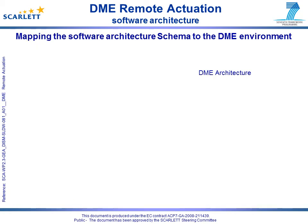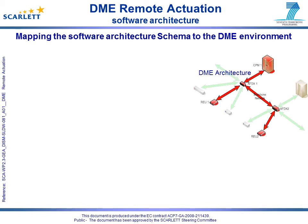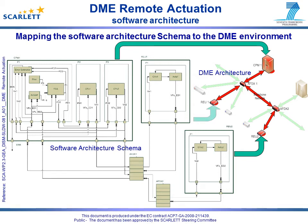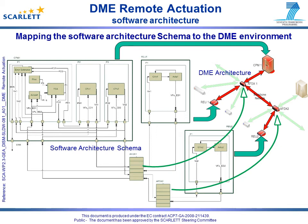The items highlighted in red on the DME architecture host the components of this system. The software architecture developed by Czesoft University of Technology implements a fast and slow control loop which is distributed across the DME environment. The slow loop software is hosted remotely by the CPM. The system provides a dual control function utilizing two identical REUs connecting to a single actuator. The software schema is implemented on a single core processing module and two REUs provided by GE Aviation Systems. The AFDX switches have been developed in collaboration between TT Tech and GE Aviation Systems.